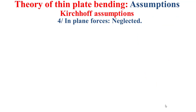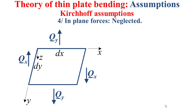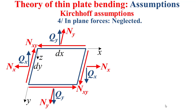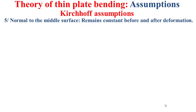The fourth assumption states that the in-plane forces should be negligible. Based on the model in this slide, it shows an infinitesimal portion of a plate with dimensions dx and dy along x and y respectively, and z is the thickness direction. The forces applied to this infinitesimal portion include shear forces depicted in blue — qx and qy — and also in-plane forces depicted in red. These in-plane forces should be negligible, so nx, ny, and nxy should be equal to zero.